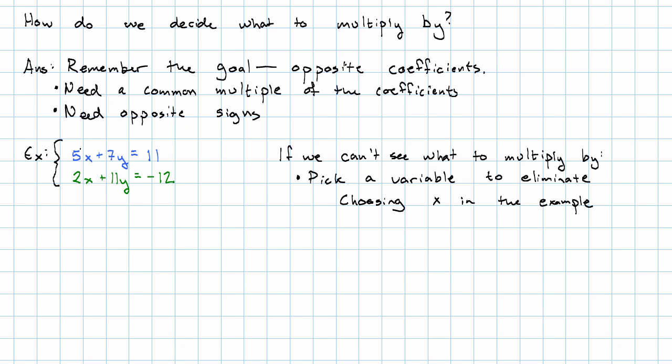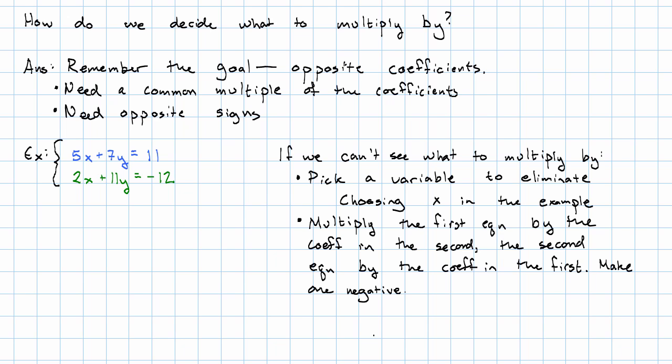Now I don't know what to multiply by, but this will always work. We'll multiply the first equation by the coefficient in the second, the second equation by the coefficient in the first, and make 1 negative. We want to end up with one of our equations having a negative coefficient of x and the other one having a positive.